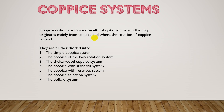Coppice systems are further divided into the simple coppice system, the coppice of two rotations system, the shelterwood coppice system, coppice with standards system, coppice with reserves system, the coppice selection system, and the pollard system. These will be covered in detail.